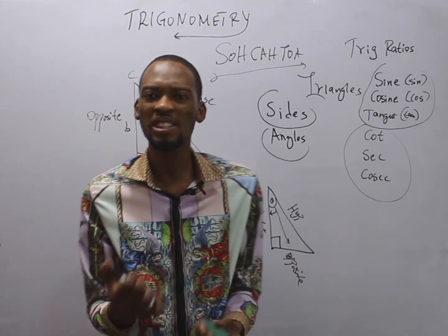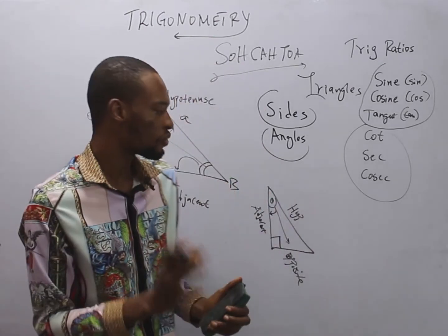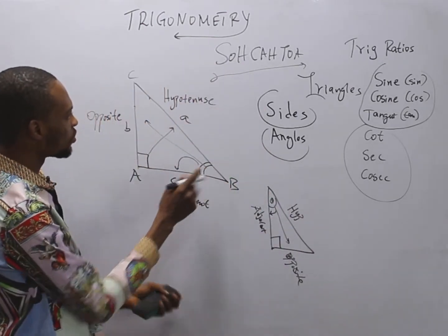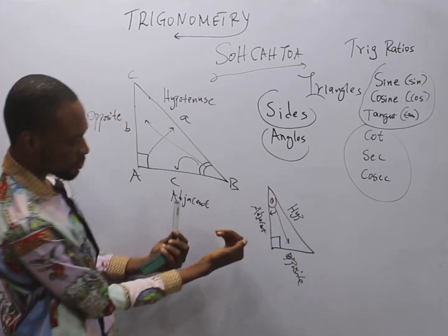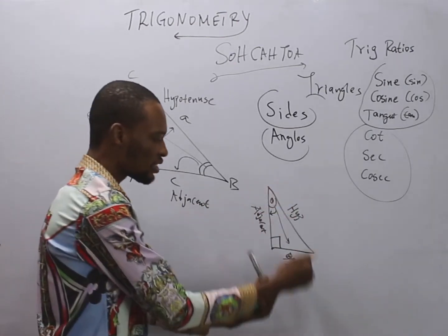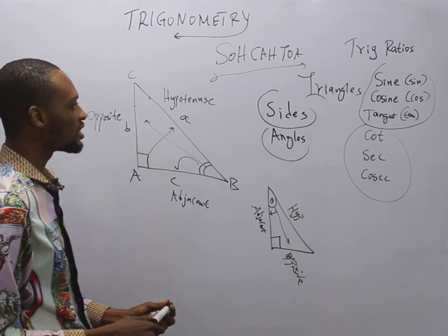So when given triangles, don't let the position confuse you. When you see this angle, double cross, or this theta, the bottom is usually the adjacent. This is the opposite.